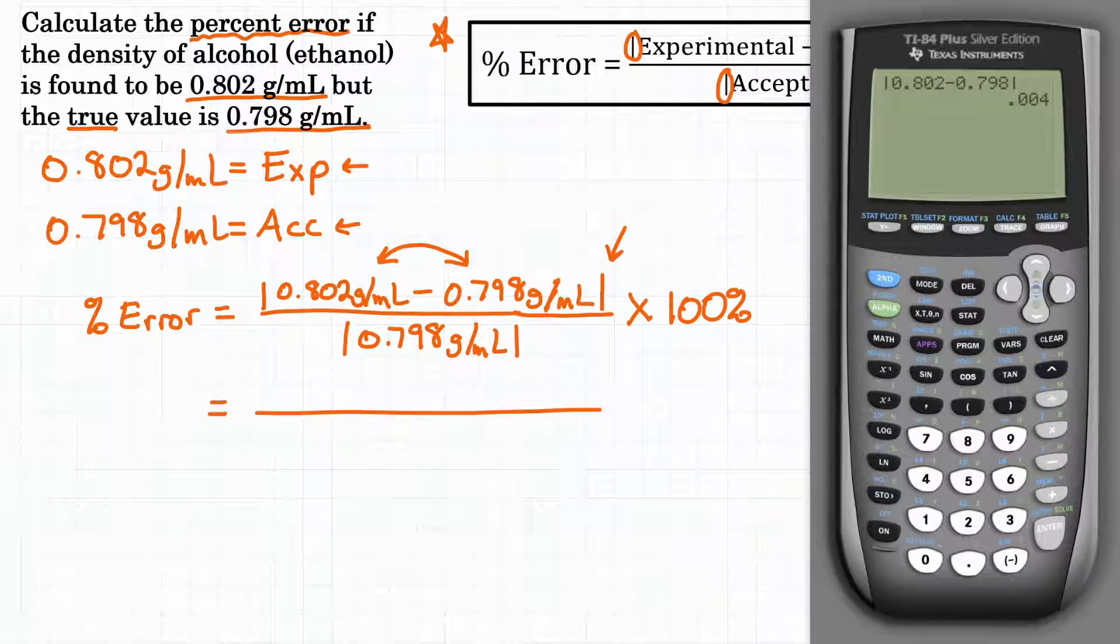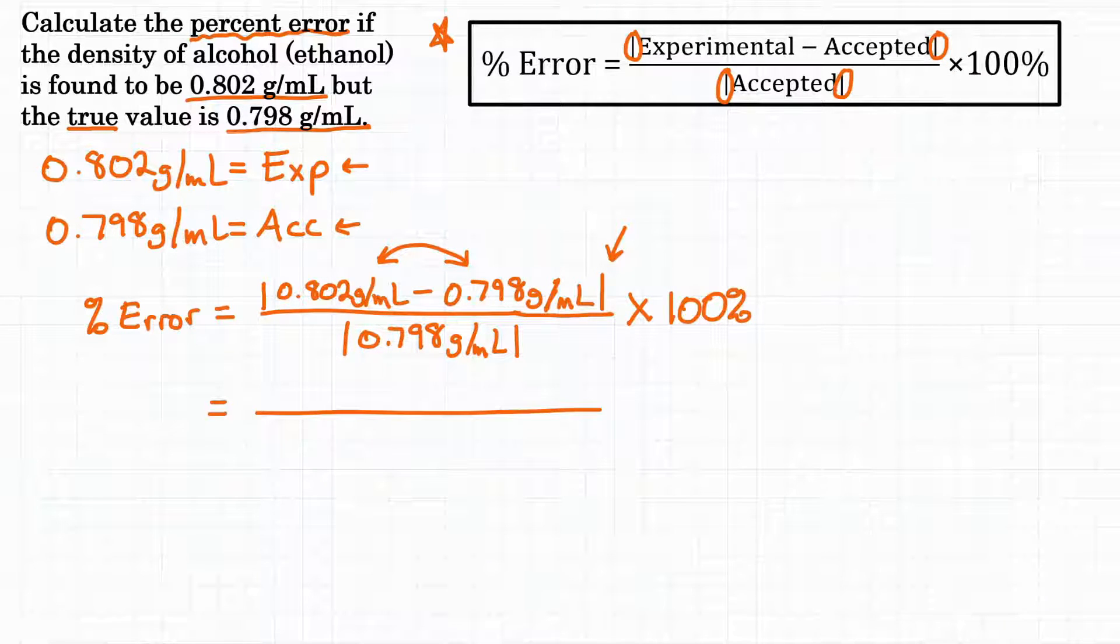So if you did 0.798 minus 0.802 you'd get negative 0.004 which you would just make positive 0.004. So on top of our fraction we're going to have 0.004 grams per milliliter.